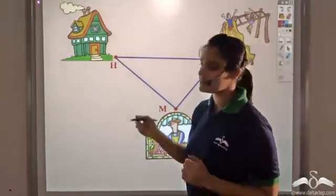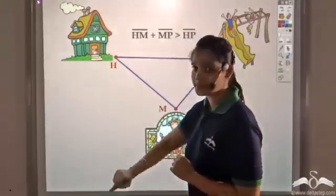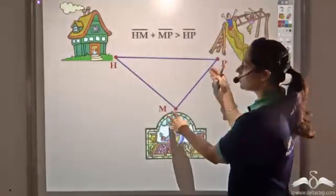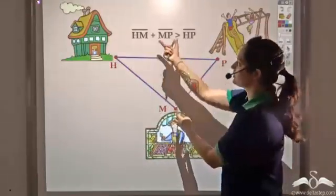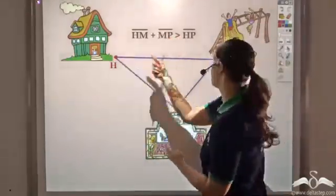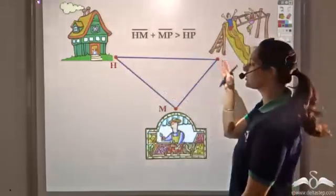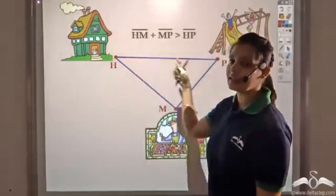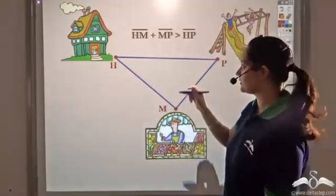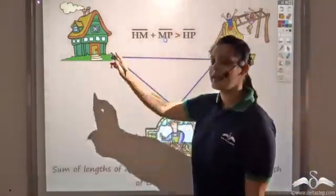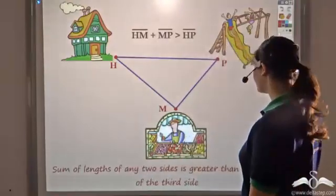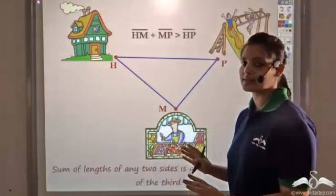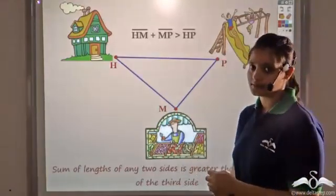This is precisely what the triangle inequality states. It says that HM plus MP would be a larger distance — that is, greater than HP if you go from your house to the playground directly. Or you can say that between two points, the straight line is the shortest distance. This holds true for any two sides of a triangle: the sum of the lengths of any two sides would be greater than the length of the third side.